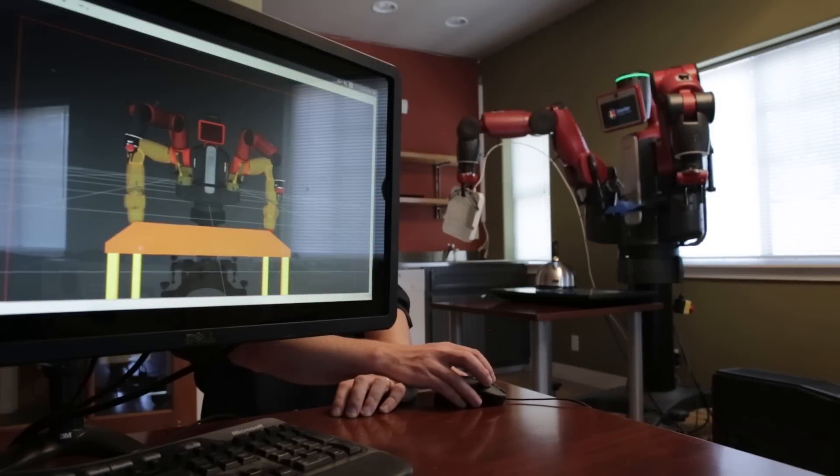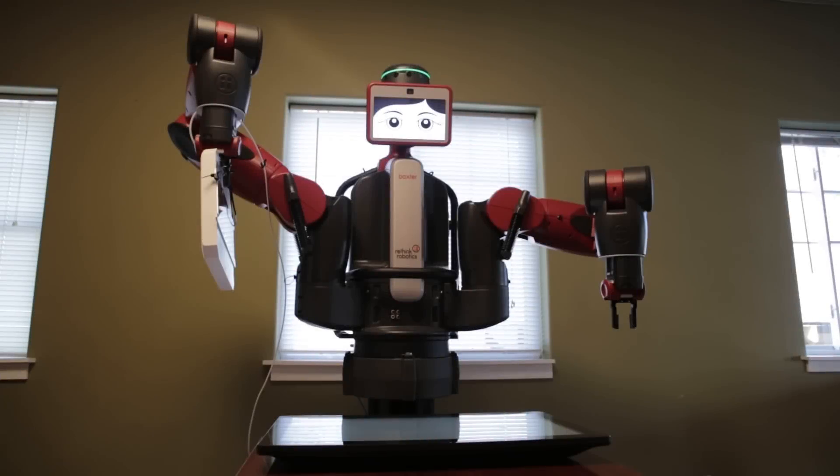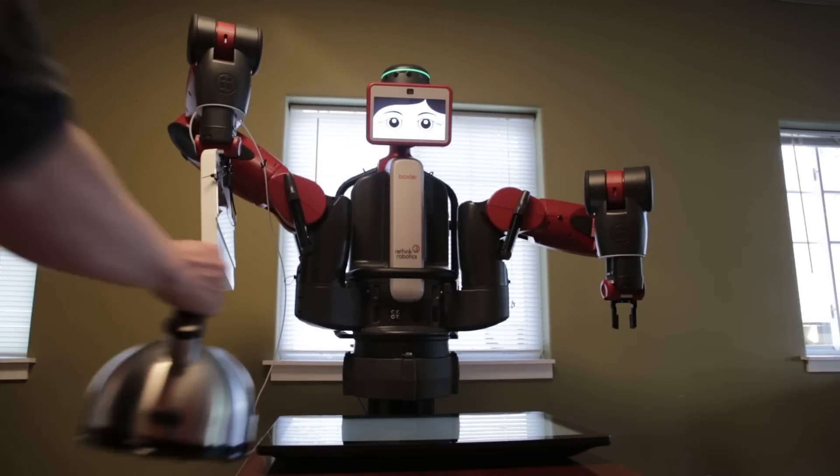Programming robots to accurately identify objects and their precise locations is hard. Liatris is an open-source project that helps make object perception easy.